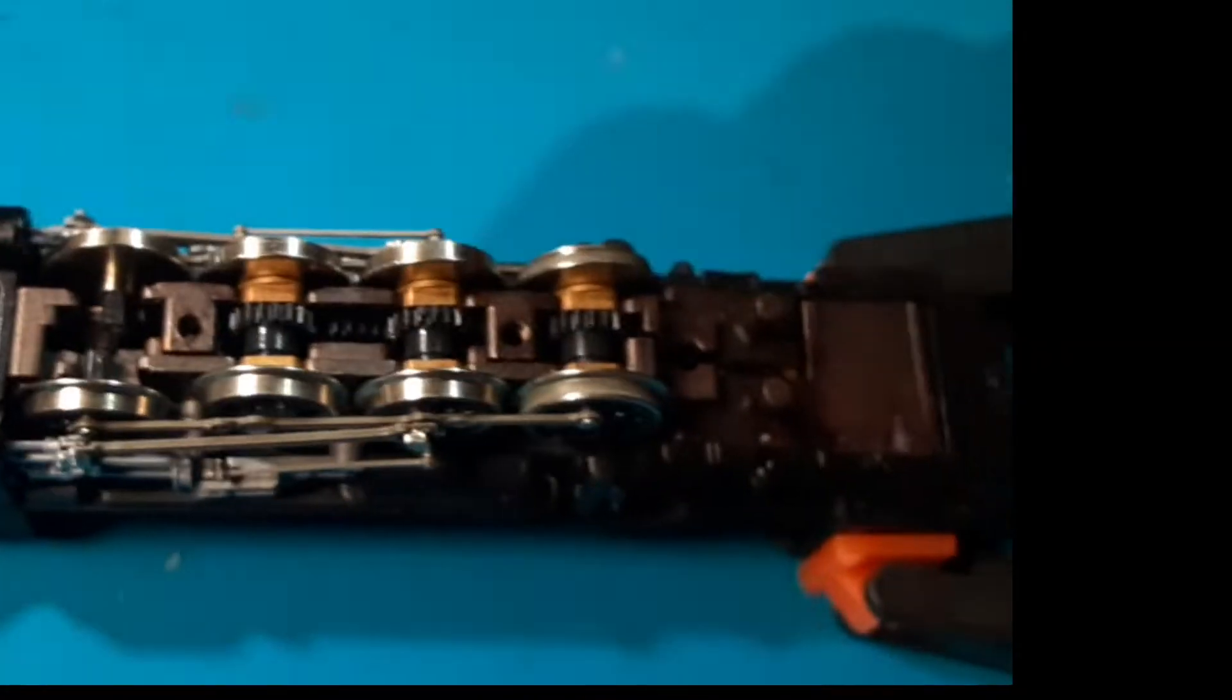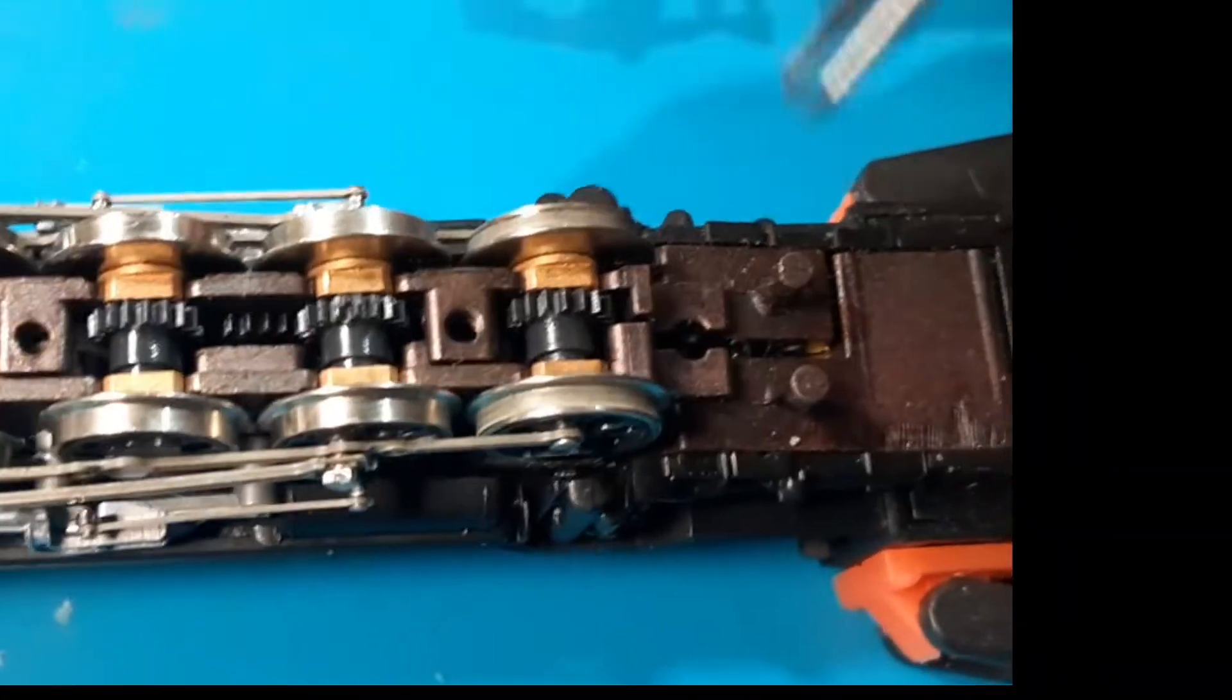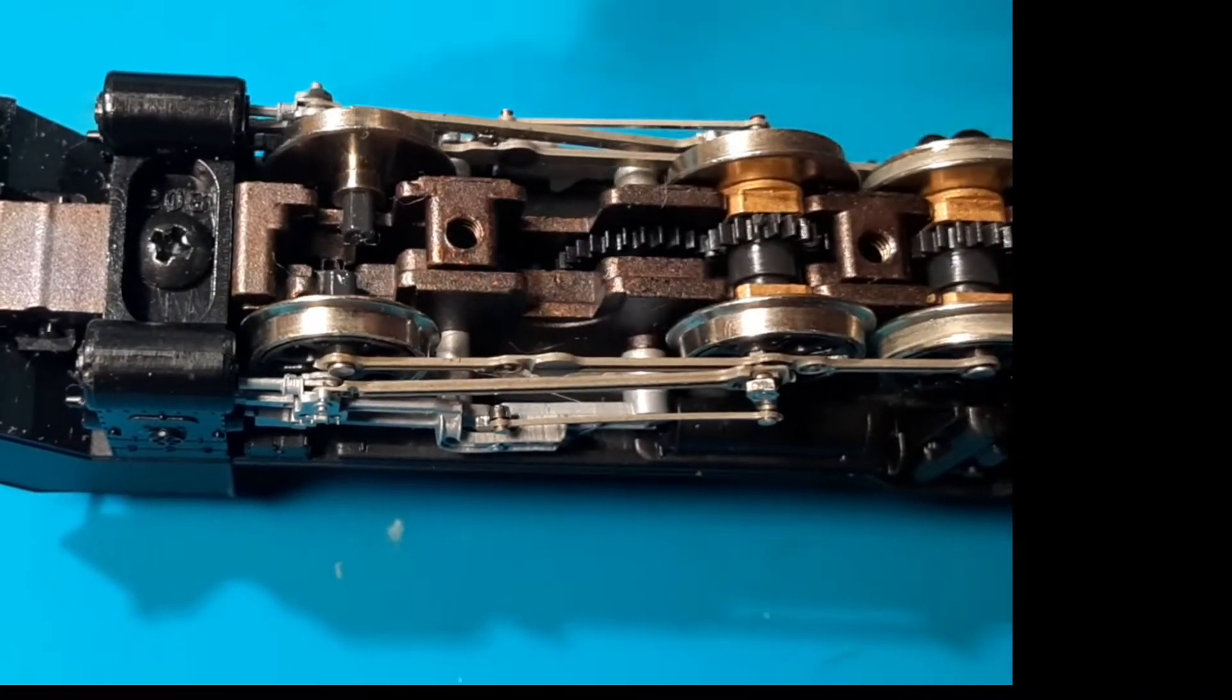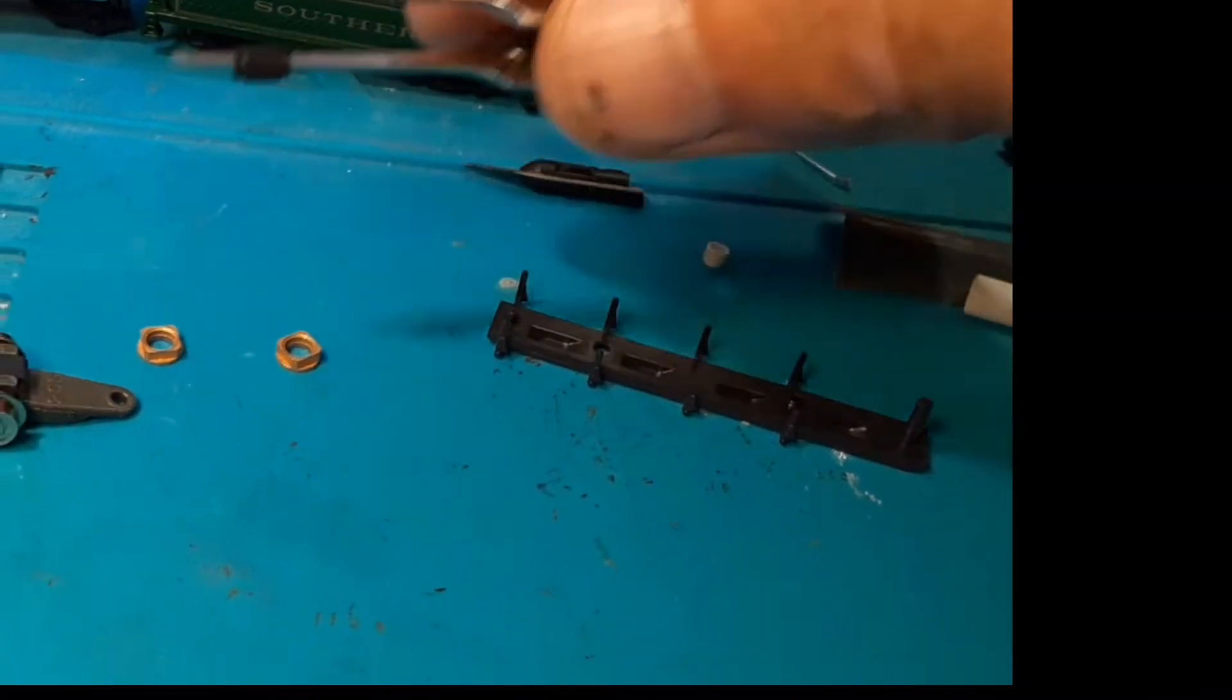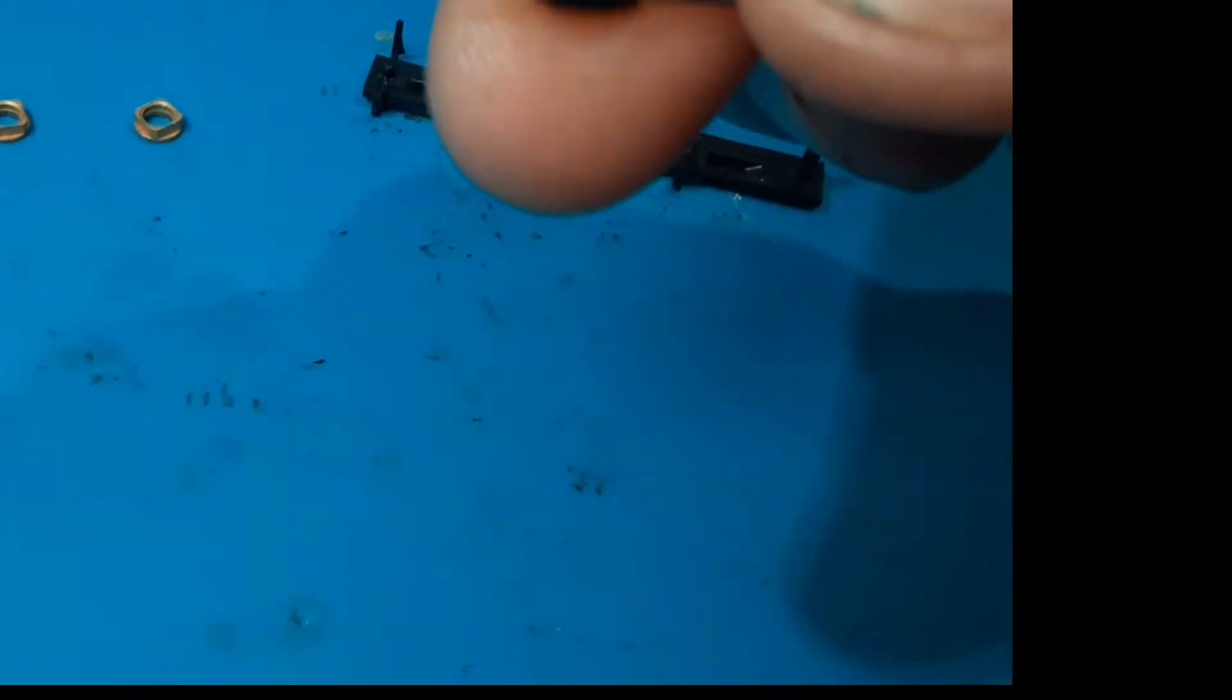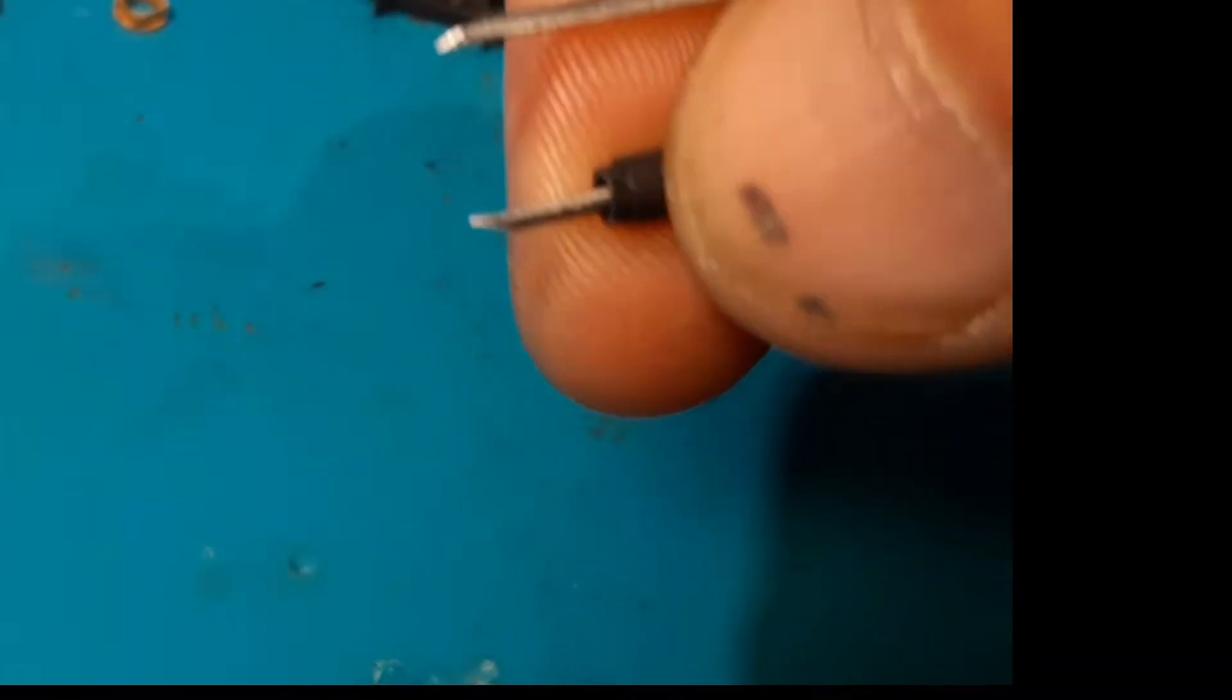This locomotive, which is obviously a 2-8-2, has three drivers. This front one is not a driver. The front one actually had this for an axle, if you guys can see that, but it has a crack in it. So I got to figure out how I'm going to fix that.